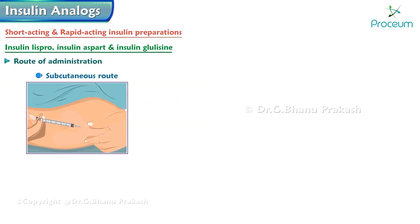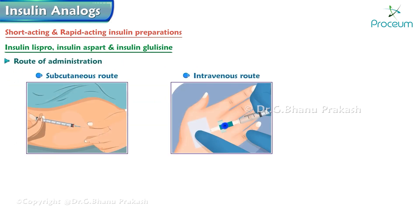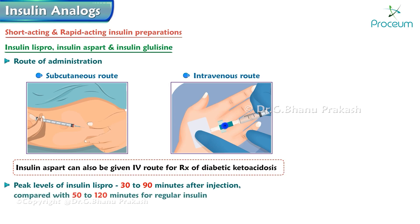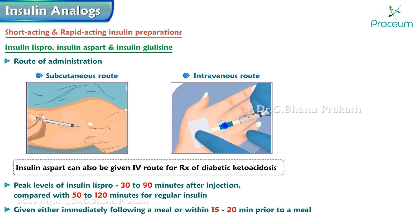They can be given subcutaneously or intravenously, and insulin aspart can also be given intravenously for treatment of diabetic ketoacidosis. Peak levels of insulin lispro are seen at 30 to 90 minutes after injection, compared with 50 to 120 minutes for regular insulin. They are usually given either immediately following a meal or within 15 to 20 minutes prior to a meal.